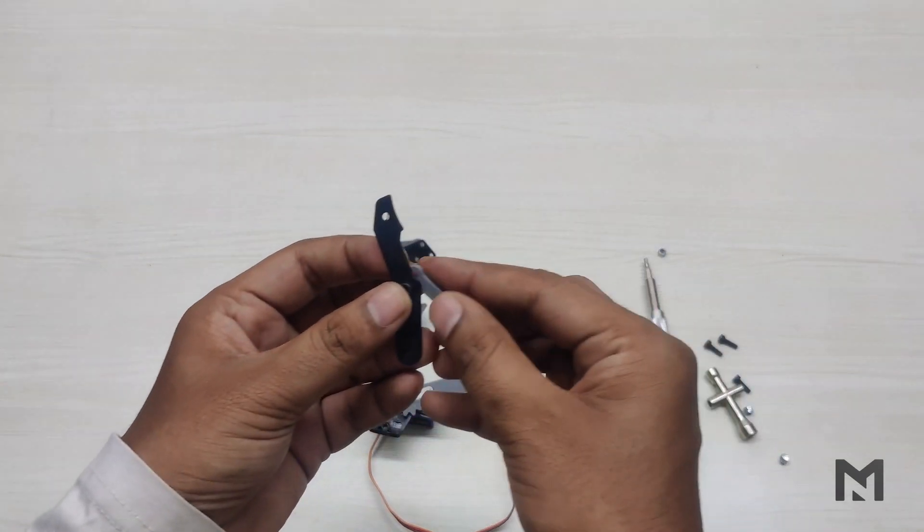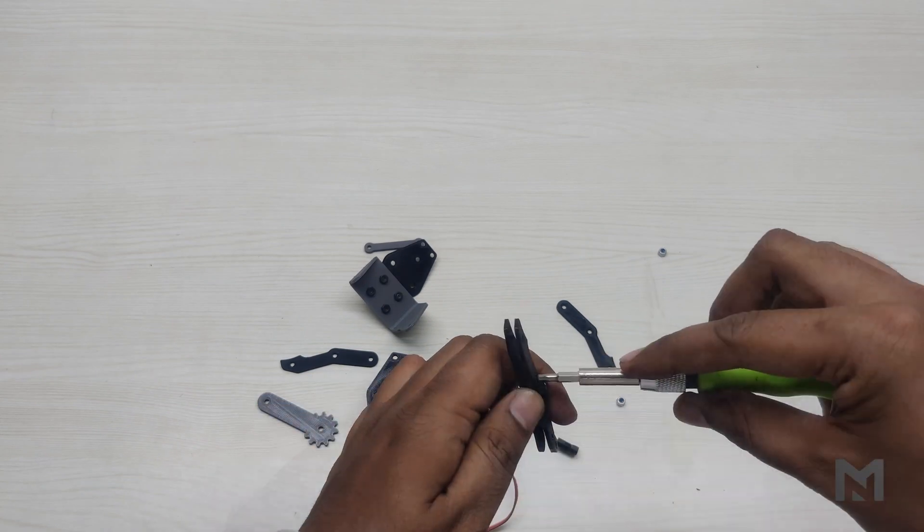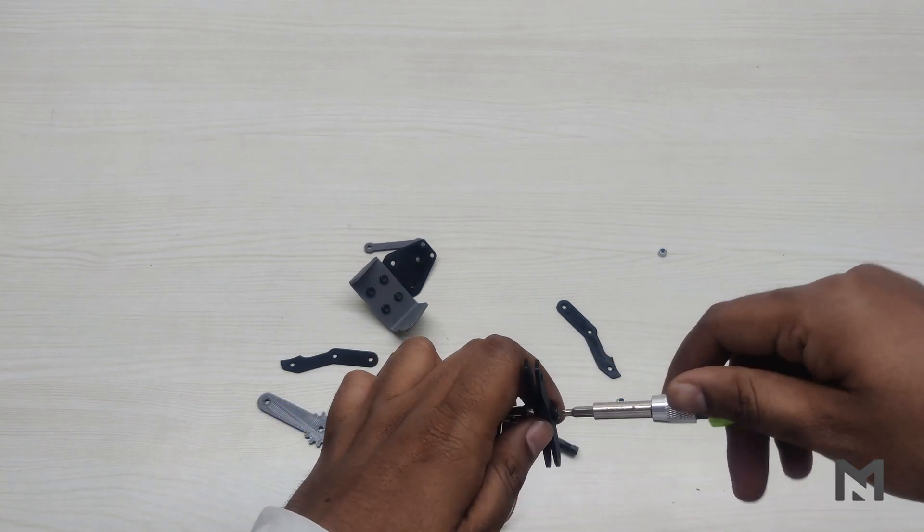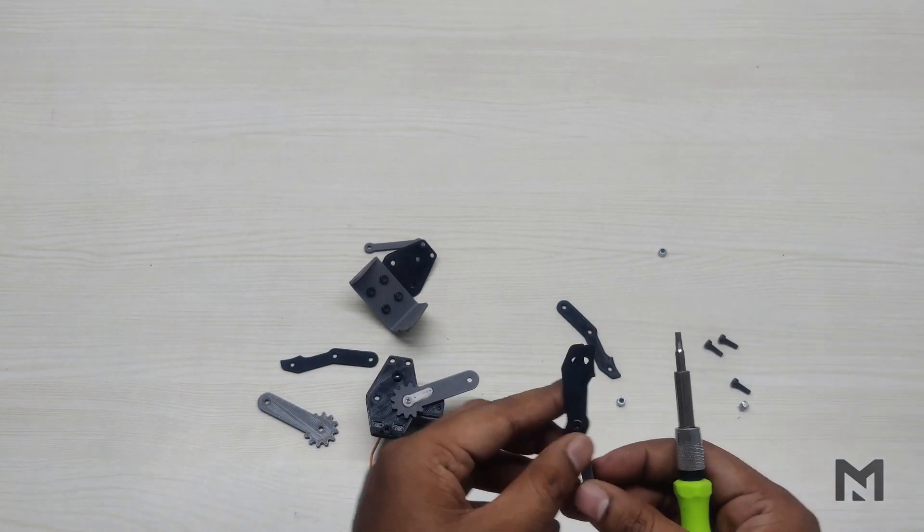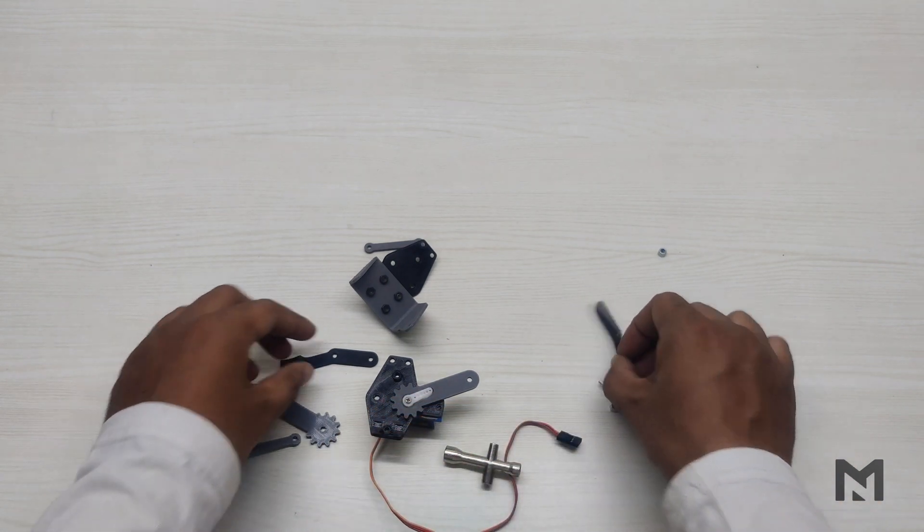Now to make the claw, use two arms and place the connecting link between them. Then insert a screw between them and tighten it. Make sure that the connecting link is able to move freely between two arms with a little resistance. Adjust the resistance by tightening or loosening the nut.